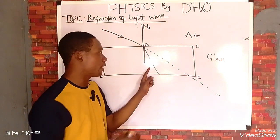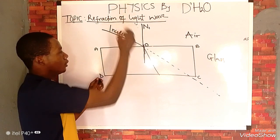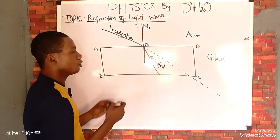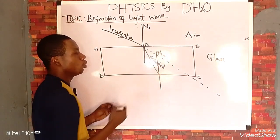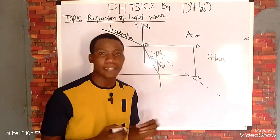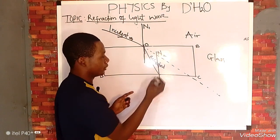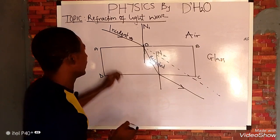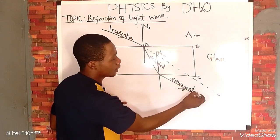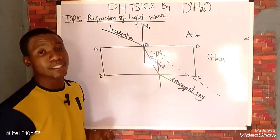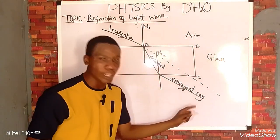Please do not confuse this with reflection — reflection means the bouncing back of a ray. So this is your incident ray, this is your refracted ray. At the second interface, I will label the normal as N2. As soon as the refracted ray is leaving the prism, it is going to bend again. This ray is called the emergent ray — the refracted ray that emerges out from the glass prism.